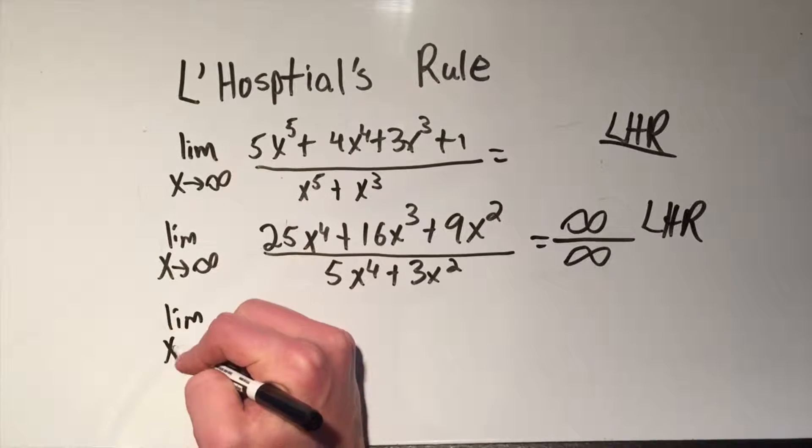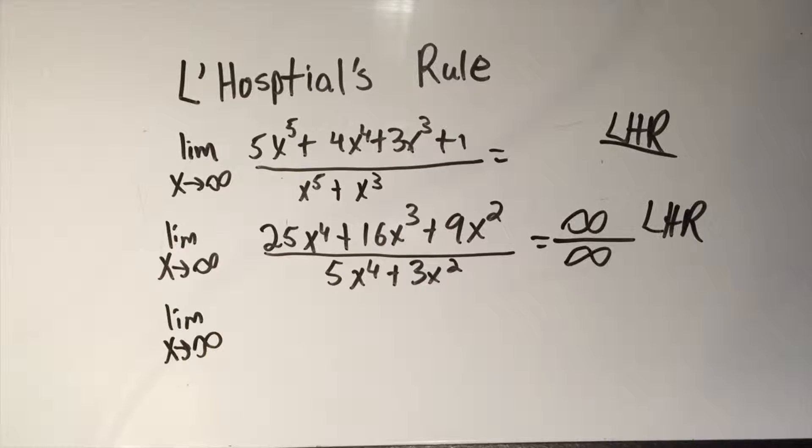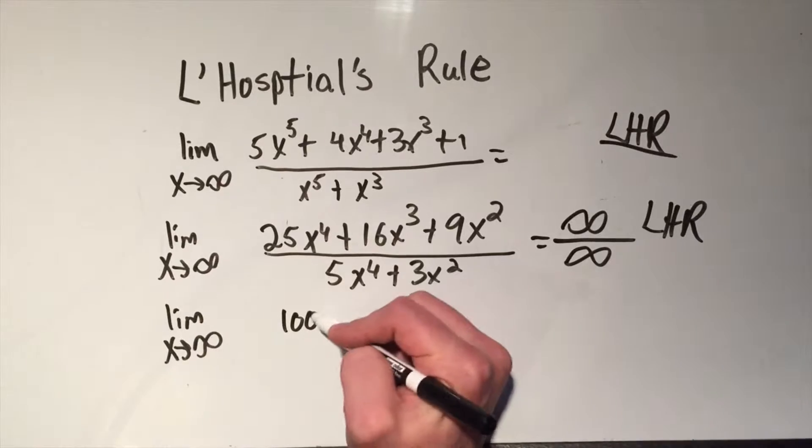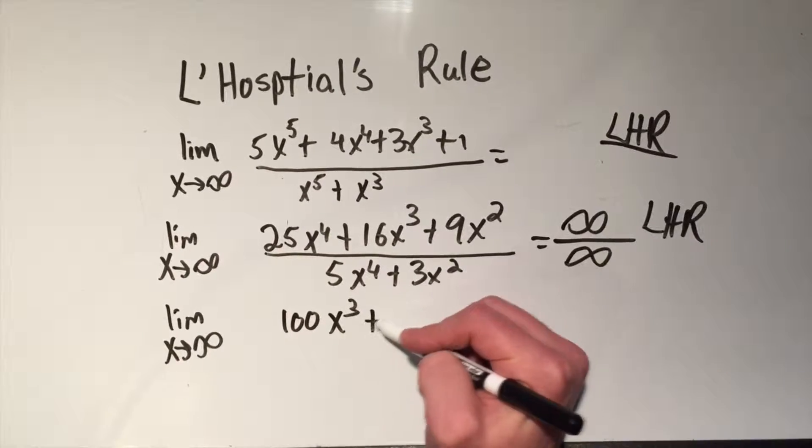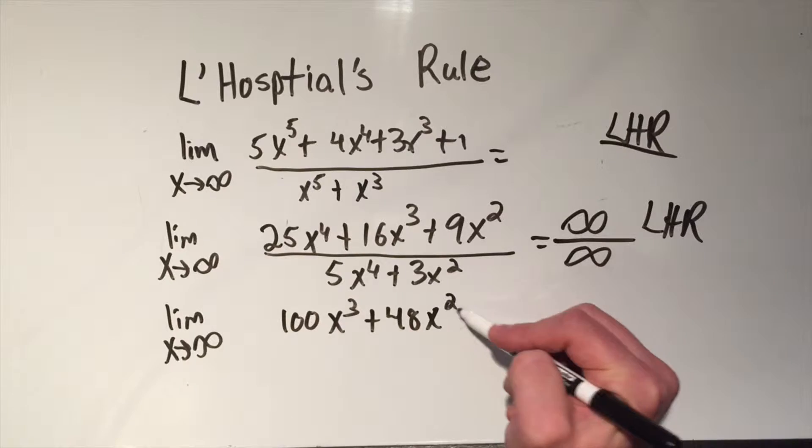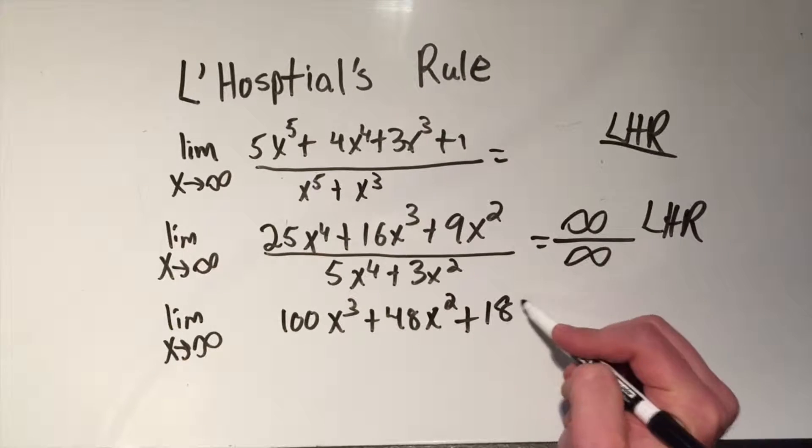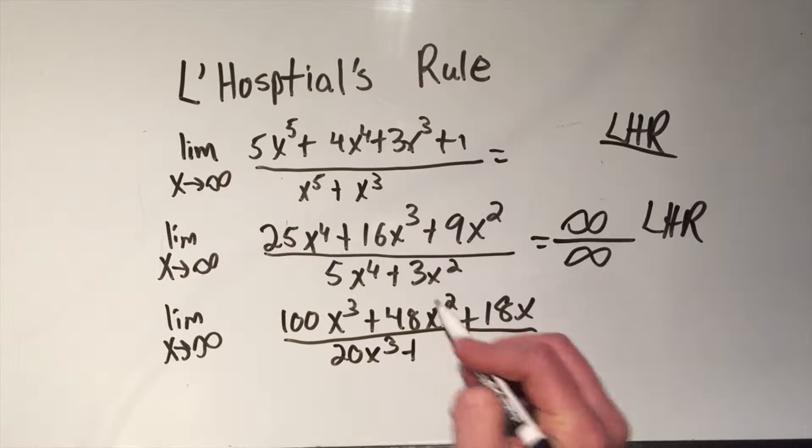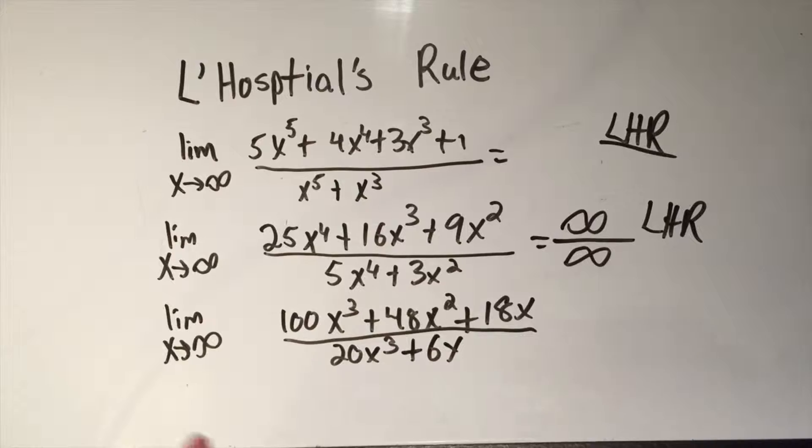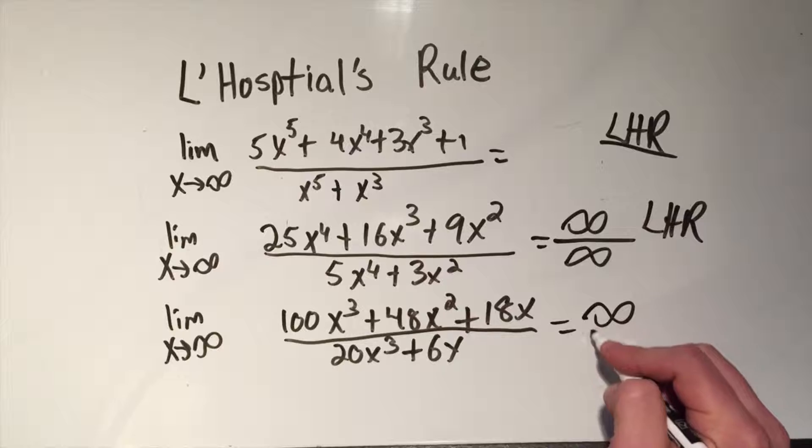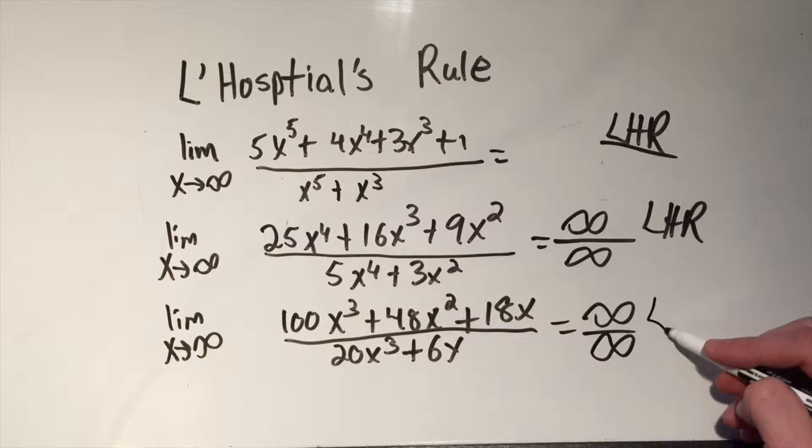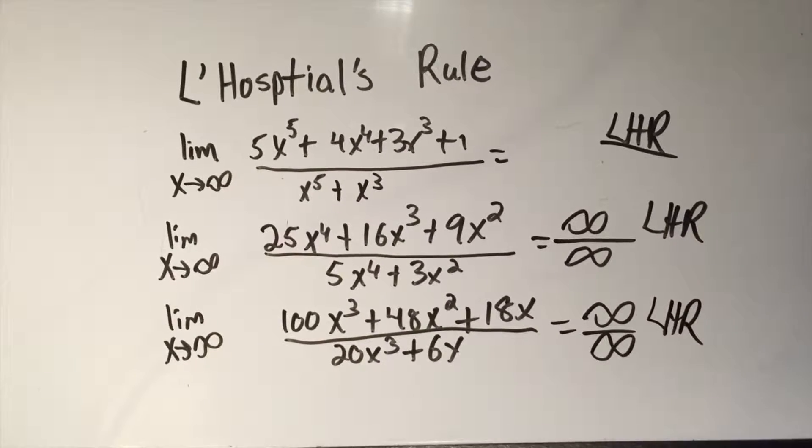I'm going to do L'Hospital's rule. And I'm going to keep doing L'Hospital's rule until we get an answer. So I got to do the power rule again. 25 times 4, that's 100x cubed plus 16 times 3, I think that's 48x squared plus 9 times 2 is 18x over 5 times 4 is 20x to the 3rd plus 3 times 2 is 6x. Alright? And now I try the limit again. If I plug in infinity, infinity, infinity, infinity, that's infinity on top. Infinity, infinity, that's infinity on the bottom. What do I do? I keep getting infinity over infinity. I keep doing L'Hospital's rule.